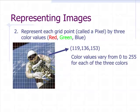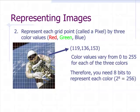Color values vary from 0 to 255 for each of the three colors. Therefore, you need 8 bits to represent each color. Because remember, 2 to the 8 is equal to 256. So you need 24 bits to represent each and every pixel in this image. So you can see how that's a lot of data.